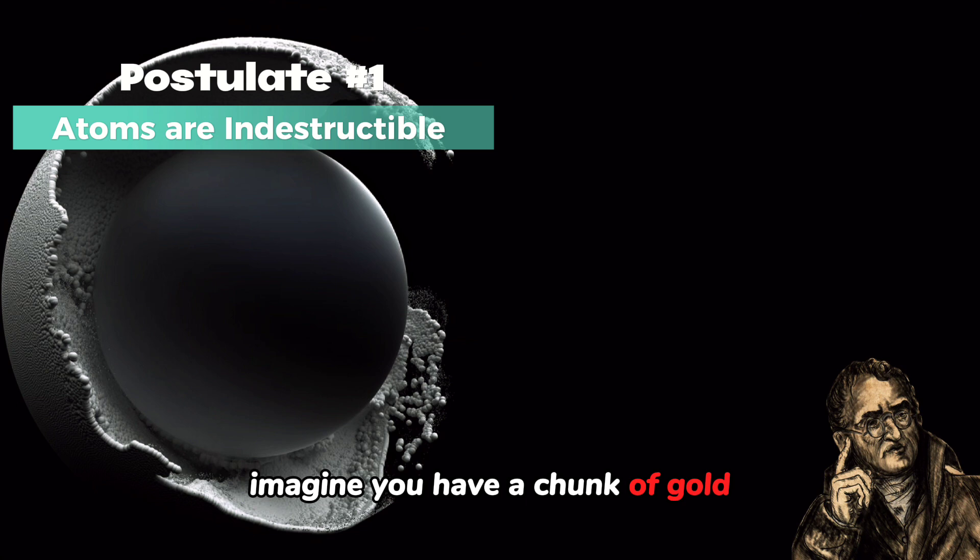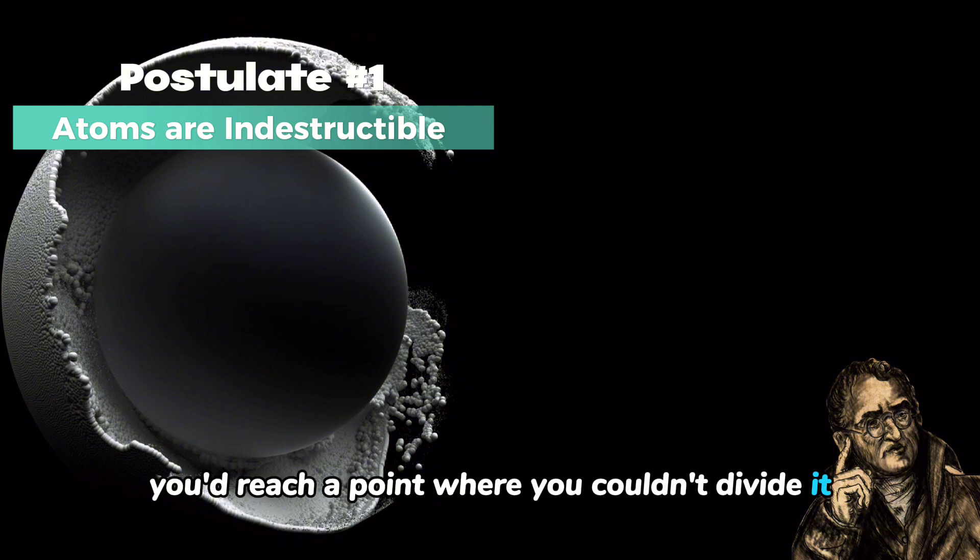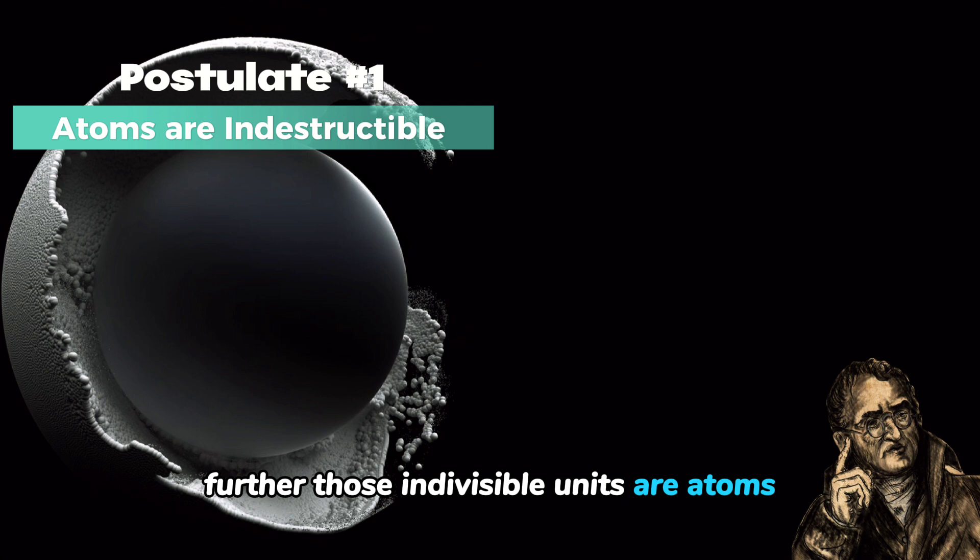Imagine you have a chunk of gold. According to Dalton, if you could somehow break it down into its smallest units, you'd reach a point where you couldn't divide it further. Those indivisible units are atoms.